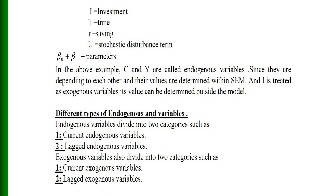Endogenous variables are divided into two categories: current endogenous variables and lagged endogenous variables. Exogenous variables are also divided into two categories: current exogenous variables and lagged exogenous variables.